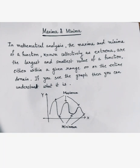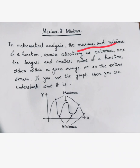First of all, we have to know what is maxima and minima. In mathematical analysis, the maxima and minima of a function — known collectively as extrema — are the largest and the smallest value of a function. Maxima is the largest value of a function and minima is the smallest value, and they are known collectively as extrema.